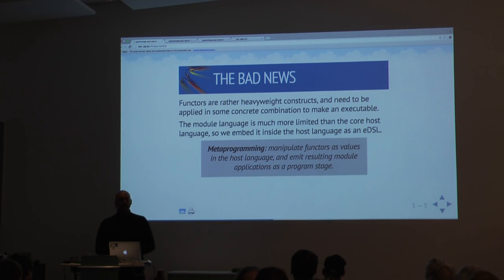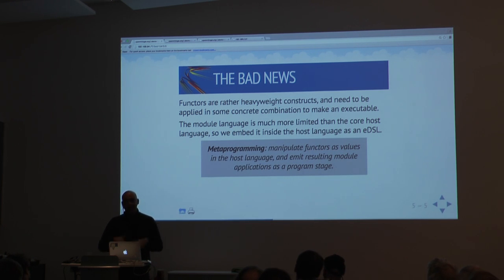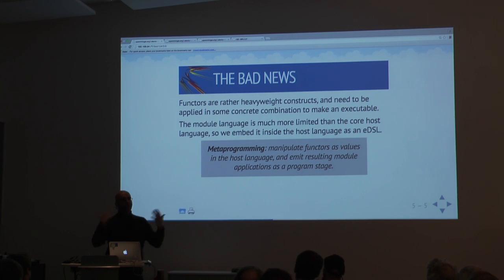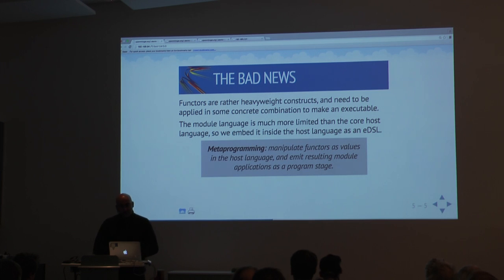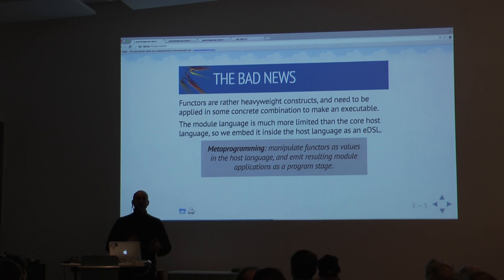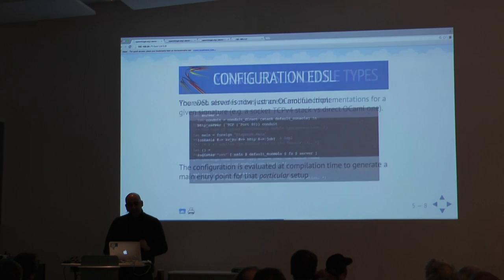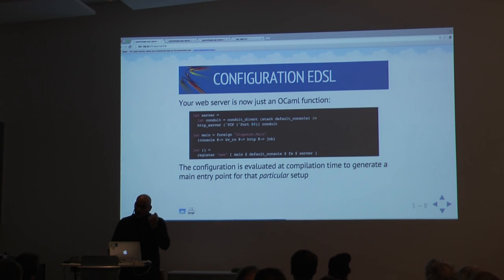The problem is that functors are quite heavyweight. Any time you need a little bit of quick functionality, you have to provide a big functor, and it's quite a heavyweight way of programming. So what we did was build a configuration language in Mirage that automates all of these choices. These choices essentially let you emit functors automatically, so you don't have to worry about a lot of the details.